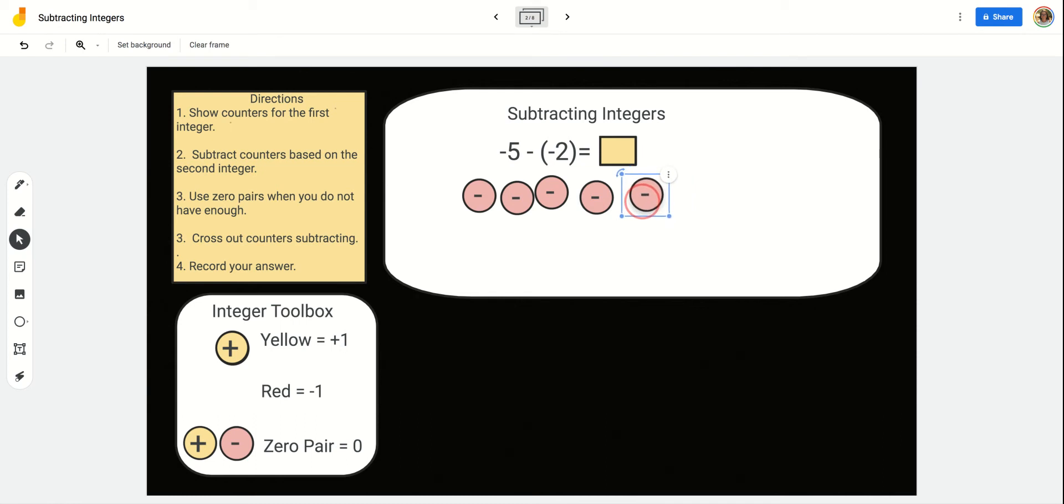So now that I have 5 negatives, can I take away 2 negatives? Yes, I can. Let's take away 2 of these. 1, 2. What's left? 3 negatives. So, negative 5 take away negative 2 is negative 3. Boom.